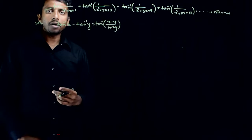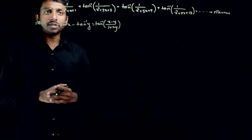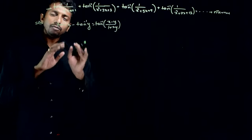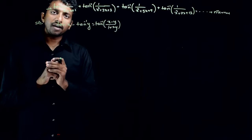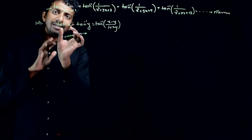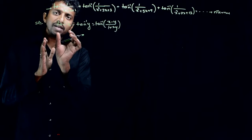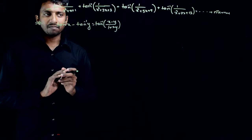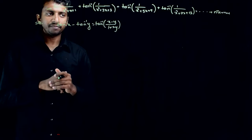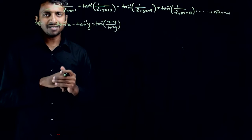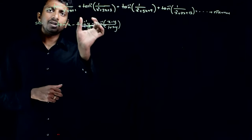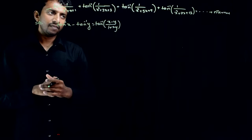What you need to try to do is express every term as two parts, such that you get tan inverse of something minus tan inverse of something. This is the general way in which inverse trigonometric sequences can be solved.